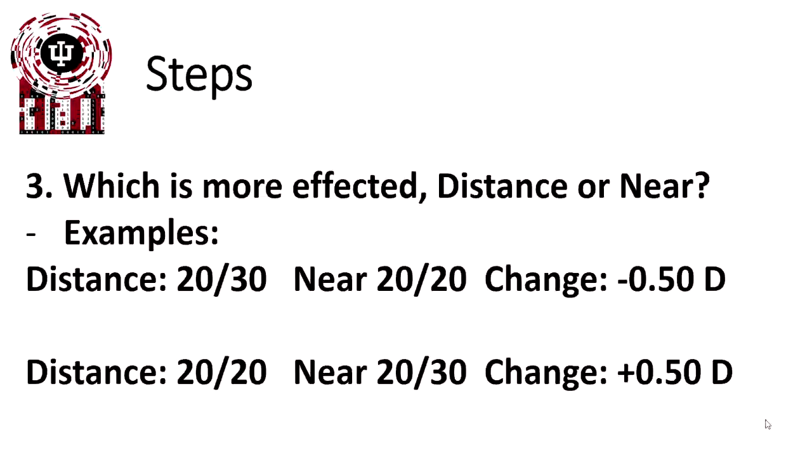In this example, we have two examples. The patient sees 20/30 at distance, 20/20 at near, for a change of minus a half diopter because it's worse at distance. In the second example, the distance is 20/20, the near is 20/30. The same prescription change of a half diopter, but this time it's a hyperopic shift because it's worse at near.